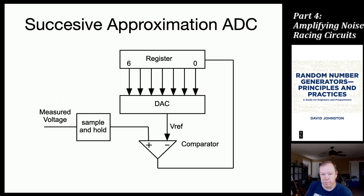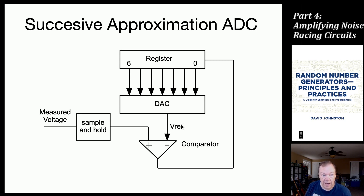First we'll talk about successive approximation analog-to-digital converters. This is a typical diagram of such a thing. You have a voltage coming in, you hold that, and you measure whether you are above or below some reference voltage, which is set at the start at the halfway point between the maximum and minimum voltage. Then you decide if it's a one or zero, and that bit gets placed in, altering the reference voltage to be within the top half or bottom half of the range.